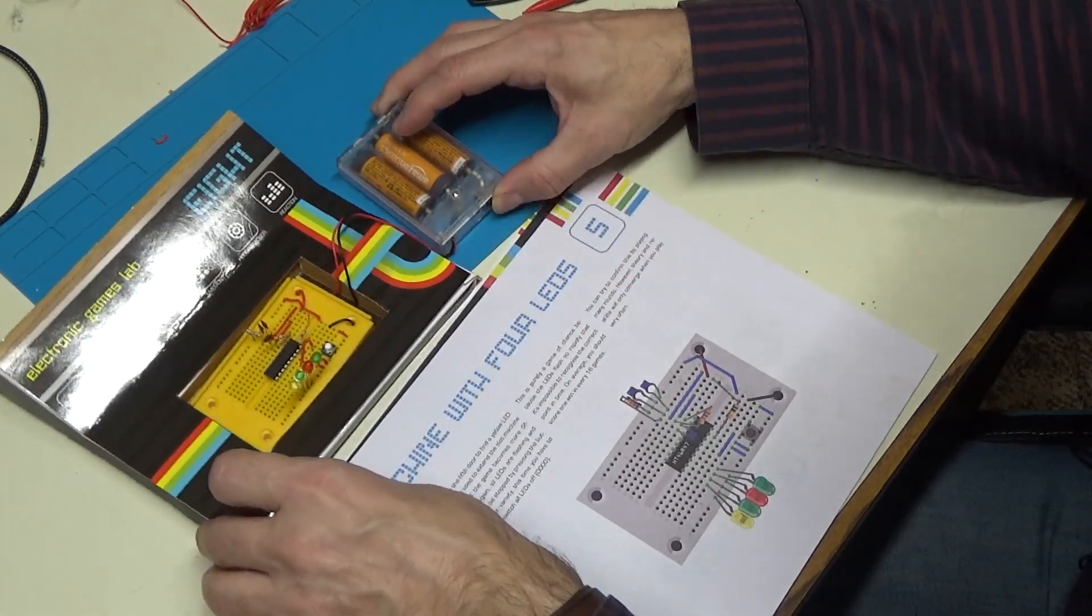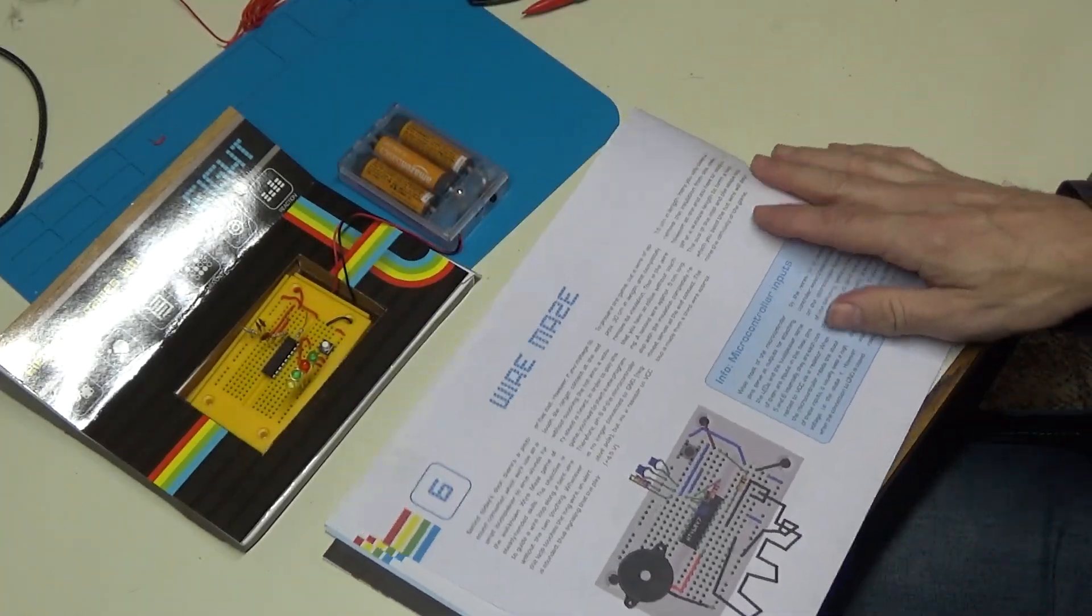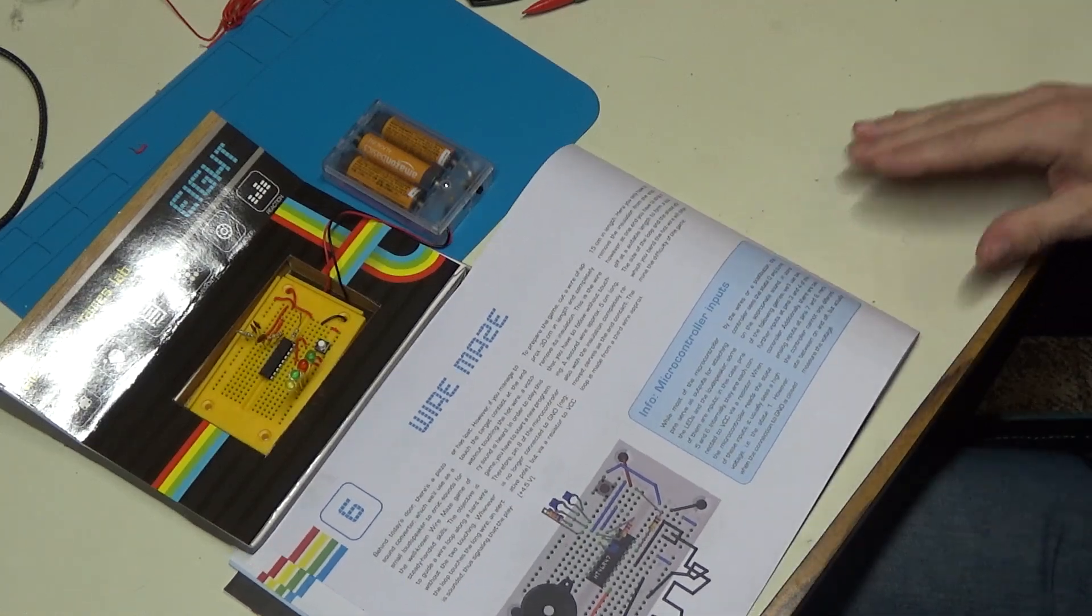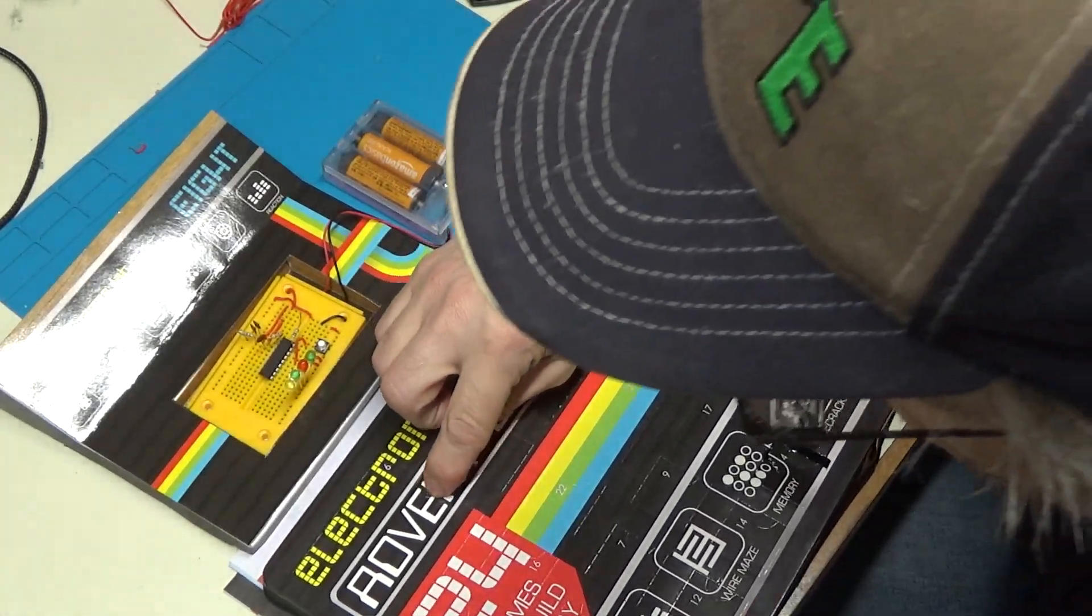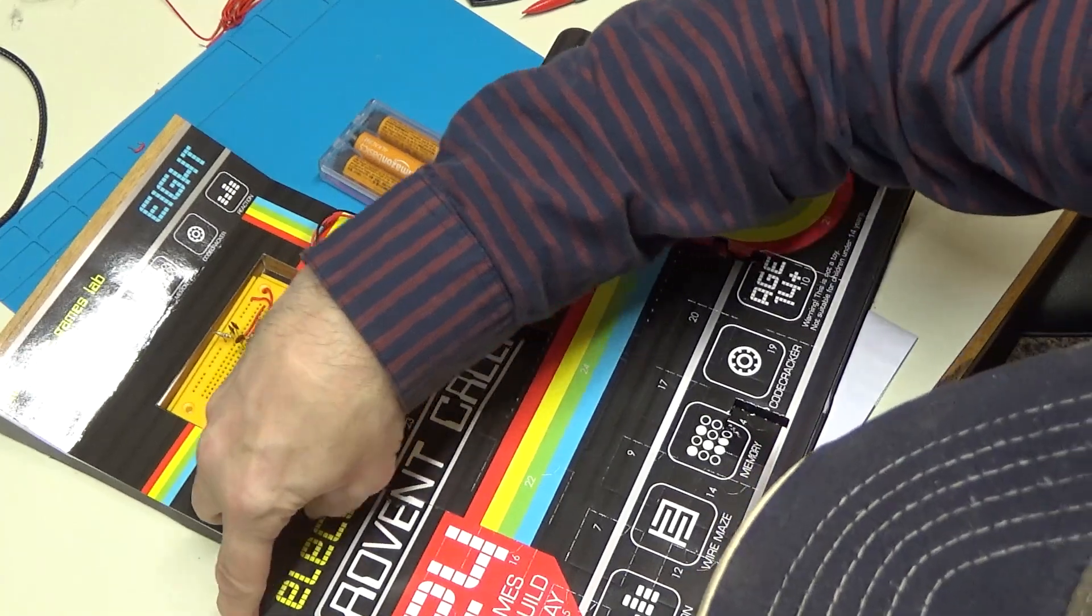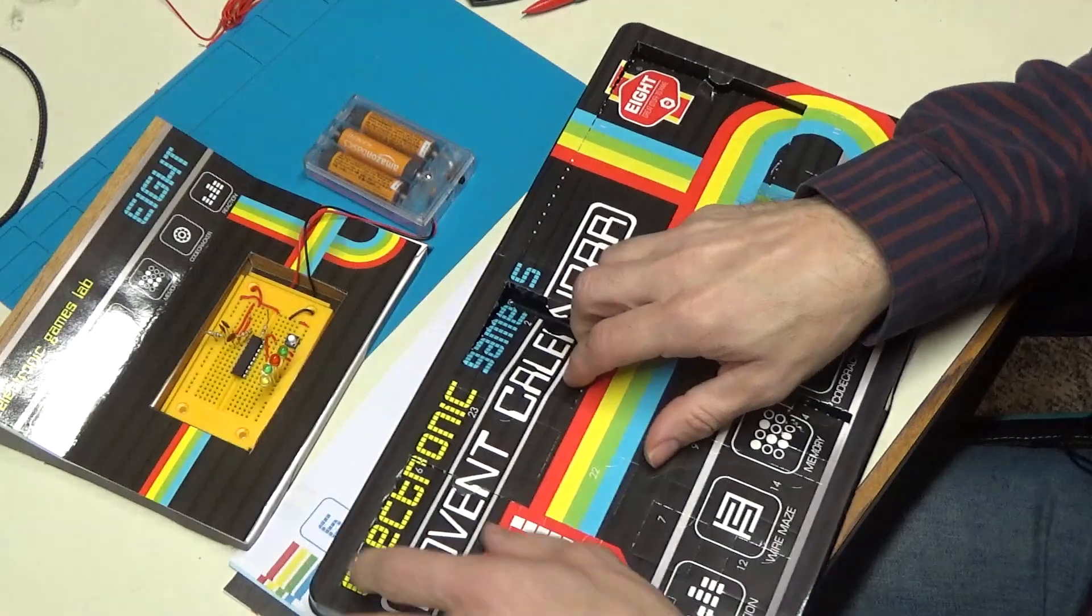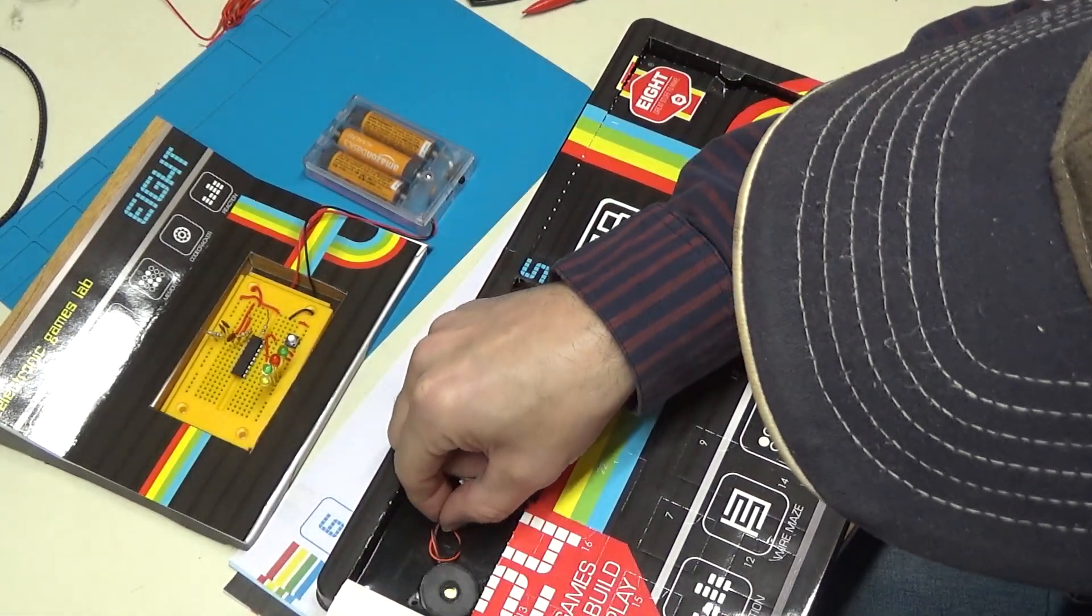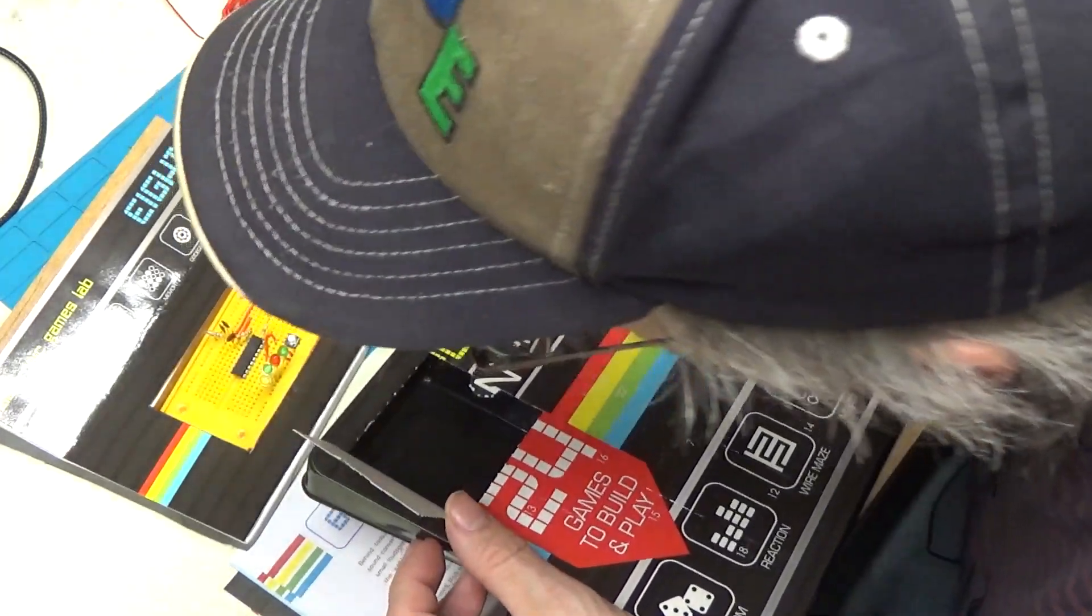But today is day six. And today's game is called Wire Maze. So let's start by opening up today's little window to see what parts they've given us. Looks like we're getting a larger packet of stuff. So we are getting the speaker. And that's it.